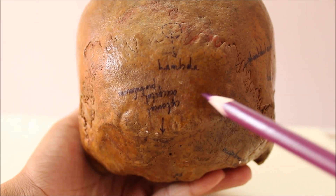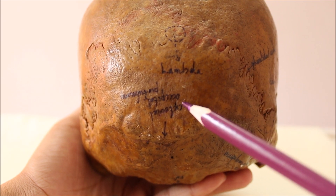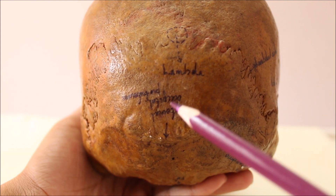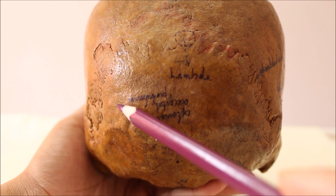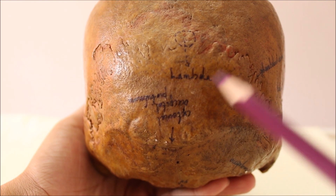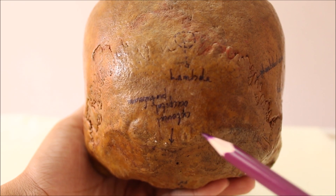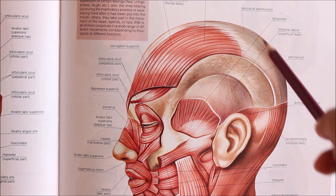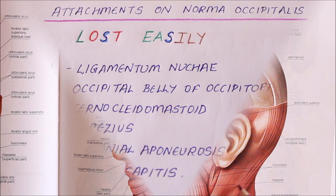The highest nuchal lines, if present, provide attachment to the epicranial aponeurosis and give origin to the occipital belly of the occipitofrontalis muscle. In case of absence of the highest nuchal lines, these structures are attached to the superior nuchal lines.